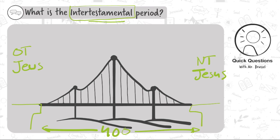There are three things you need to know about what happened between the Old Testament and the New Testament. The first is that there was an empire of the Greeks. You might have heard of Alexander the Great — he was the first leader. The nations that came after disrespected the Jews quite a bit. The best example is that they took a pig and sacrificed it in the temple on God's altar — a terrible thing. What was good about this time was that the Greeks had one language, Greek, which would allow the gospel to spread much faster.